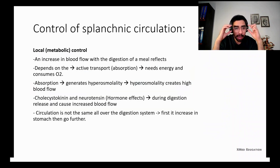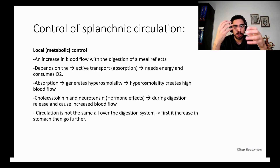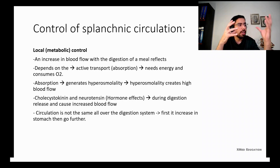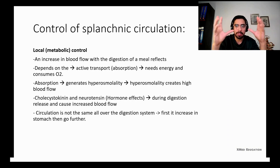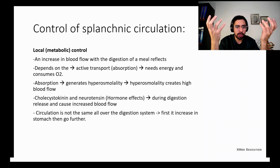The most important factor controlling splanchnic circulation is metabolic activity. When we eat, the GI tract starts working — the stomach releases digestive material and enzymes, increasing activity. This activity depends on active transport channels, which need ATP. For ATP production, oxygen and energy are consumed, so the GI tissue consumes both oxygen and energy during digestion.